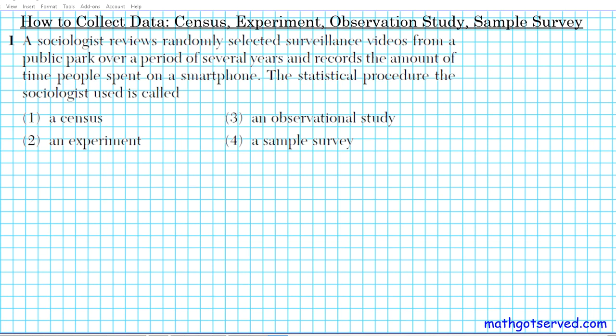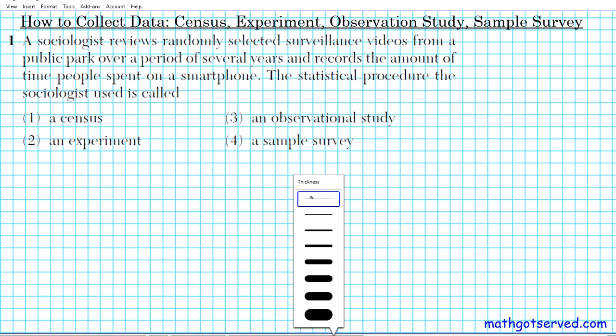Let's take a look at question one. In question one, we're going to be assessing the different ways to collect data — either census, experiment, observational studies, or a sample survey. Question one reads: a sociologist reviews randomly selected surveillance videos from a public park over a period of several years and records the amount of time people spent on a smartphone. The question asks: what statistical procedure did the sociologist use? We'll go over these four different statistical procedures and see which one best represents what this sociologist used.